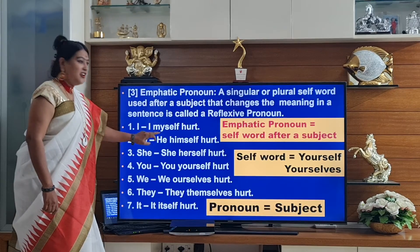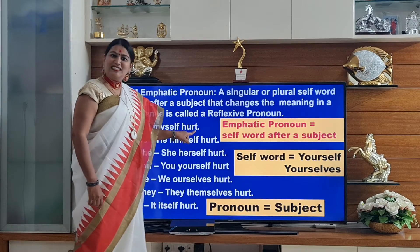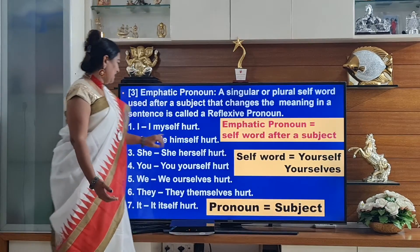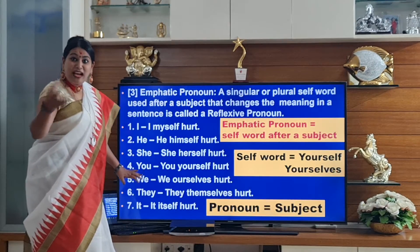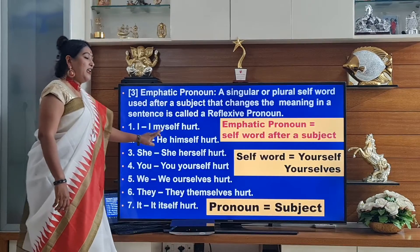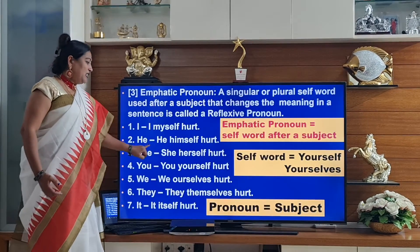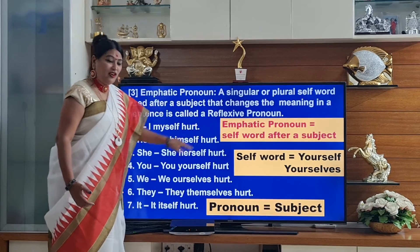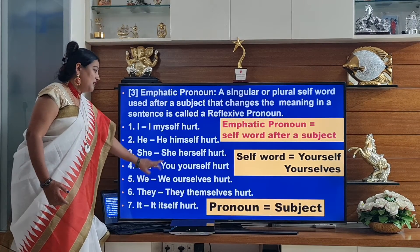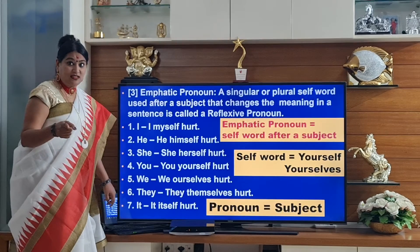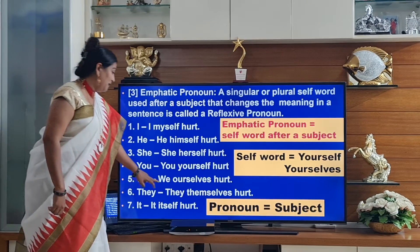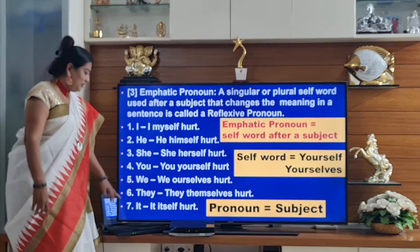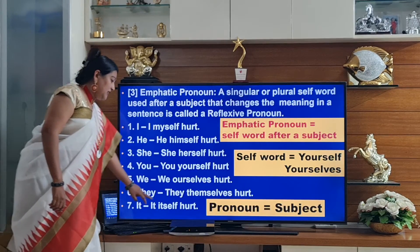The self-word comes after the subject. I is a subject, he is a subject. So the self-word is immediately after the subject, not after the verb. I myself hurt — meaning no one else hurt me, I myself did. She herself hurt. You yourself hurt — don't blame it on me, you yourself hurt. We ourselves hurt — please don't scold him, we ourselves hurt. They themselves hurt. It itself hurt.